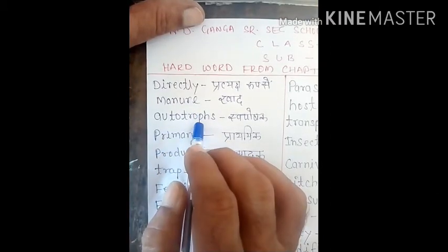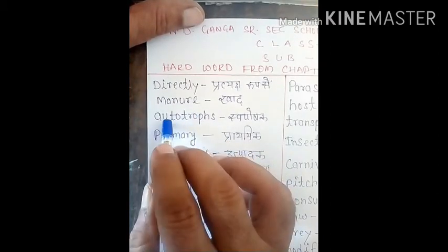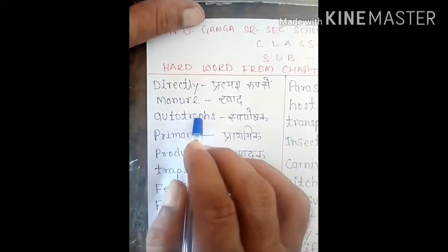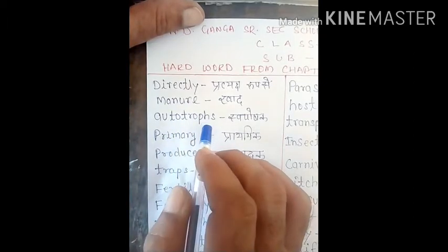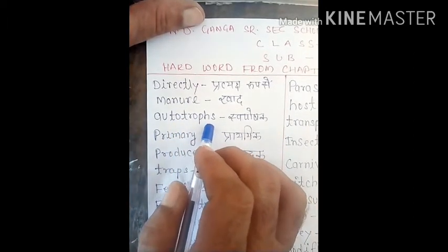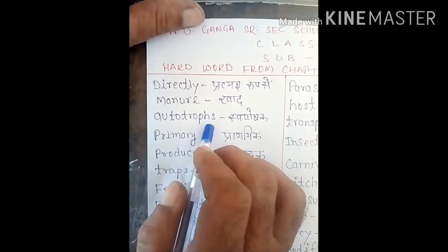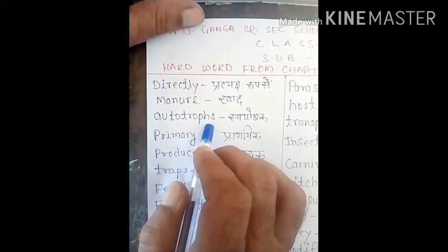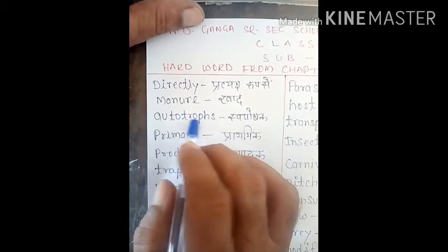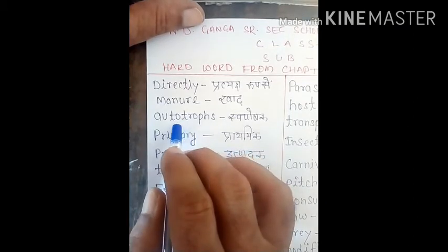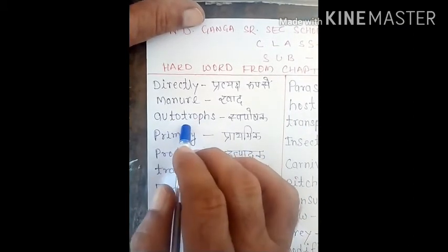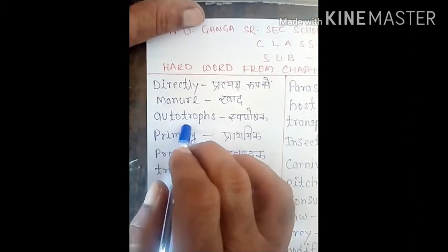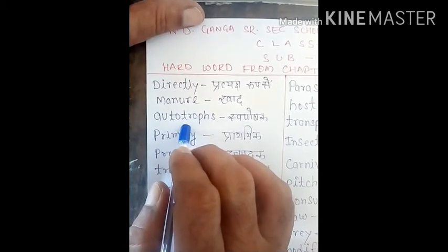Next word is 'autotrophs', A-U-T-O-T-R-O-P-H-S. Autotrophs means 'swayam posak'. Ye word aaya jaise plants make their own food, so they are called autotrophs — swayam posak. Wo apna khana jo ped swayam banaate hain, to unko autotrophs kehte hain.